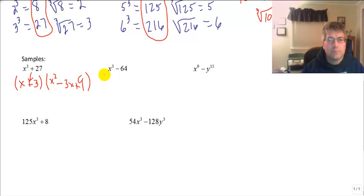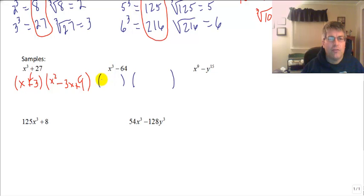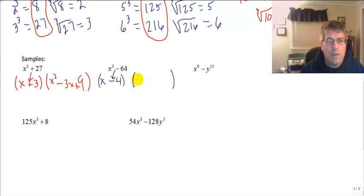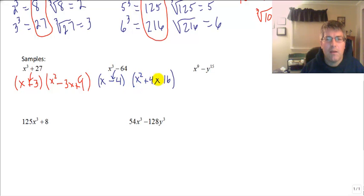Sample problem: x cubed minus 64. Again, both are perfect cubes. We factor into a binomial times a trinomial. The cube root of x cubed is x, and the cube root of 64 is 4. We bring down the minus sign, so the binomial is x minus 4. Since we've used our one minus sign, the trinomial is all pluses: x squared plus 4x plus 16. So the answer is (x − 4)(x² + 4x + 16).